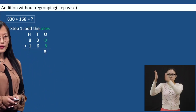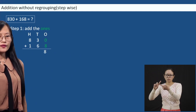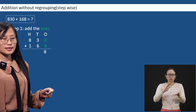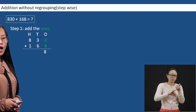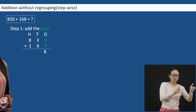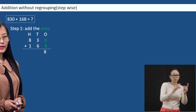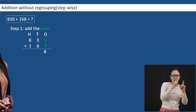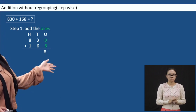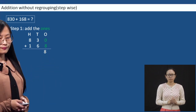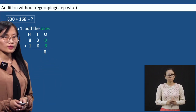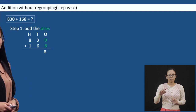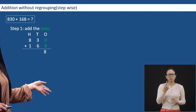Here, add the ones. You have to first arrange according to the place value — that is ones, tens, and hundreds, denoted by ones, tens, and hundreds. You first add it up; you always start from ones, from the right.